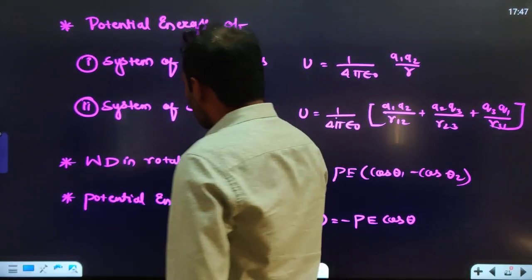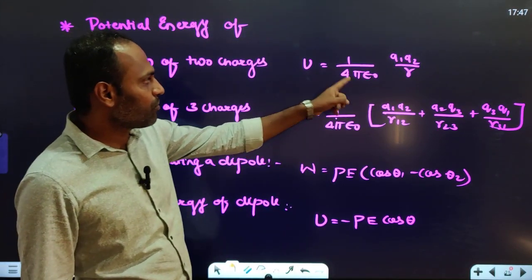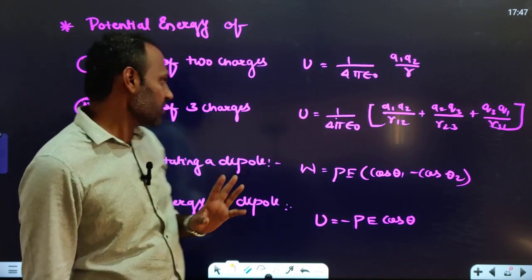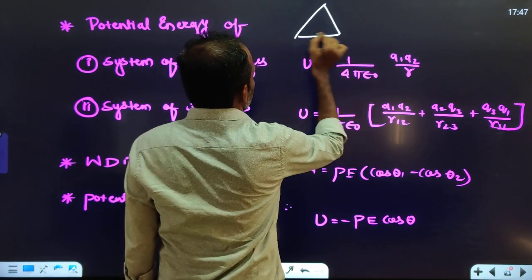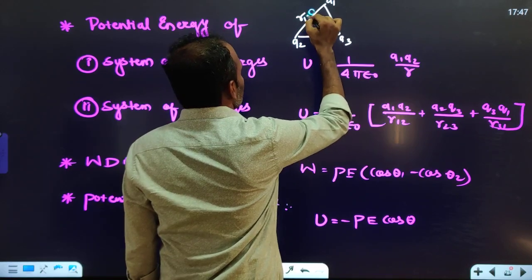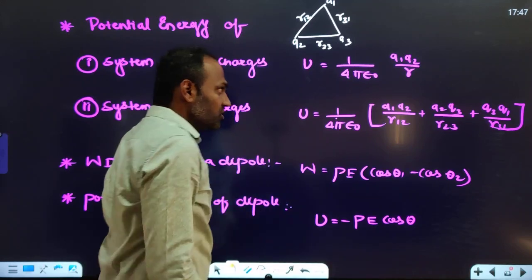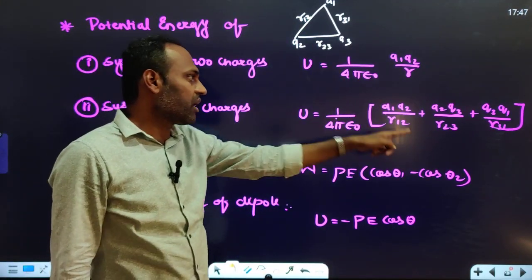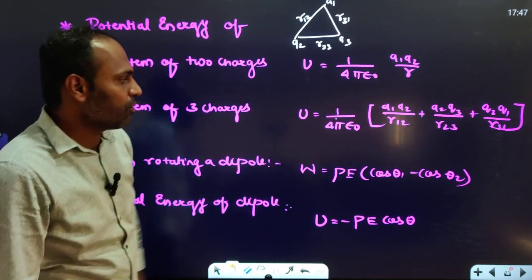Potential energy of a system of two point charges is (1/4πε₀) × Q₁Q₂/r, where r is the distance between the two charges. For a system of three charges Q₁, Q₂, Q₃ with separations R₁₂, R₂₃, R₃₁, the potential energy is (1/4πε₀) × [Q₁Q₂/R₁₂ + Q₂Q₃/R₂₃ + Q₃Q₁/R₃₁].